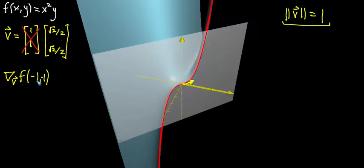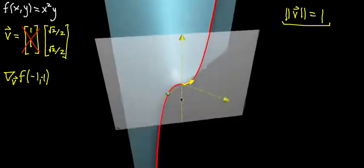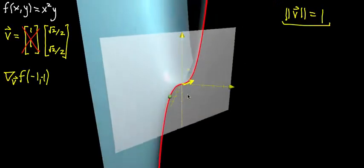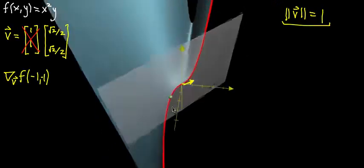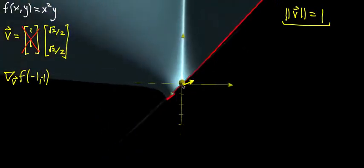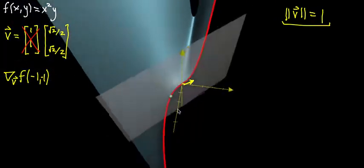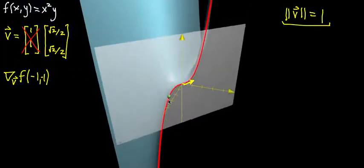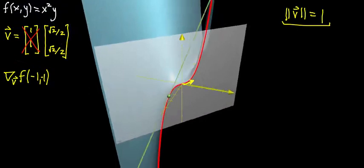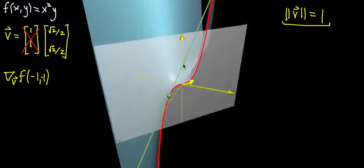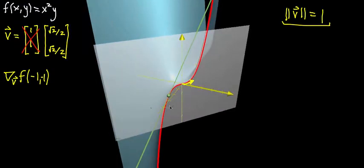If we evaluate this at the point (-1, -1), we can draw that on the graph and see where it actually is. Looking from above, that point is at negative one, negative one. If we want the slope at that point, we think of the tangent line to that curve and ask what its slope is.